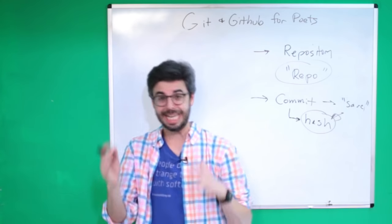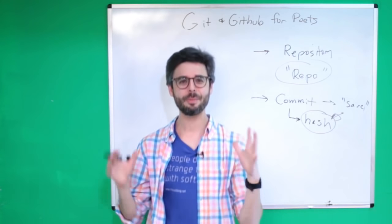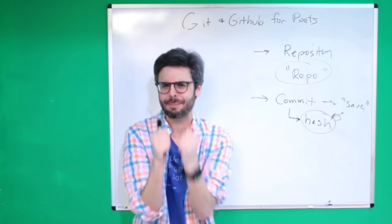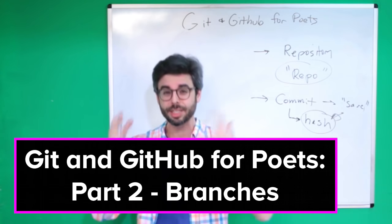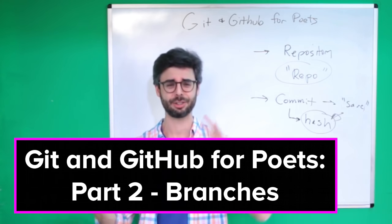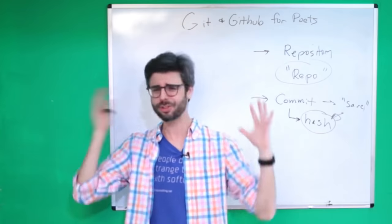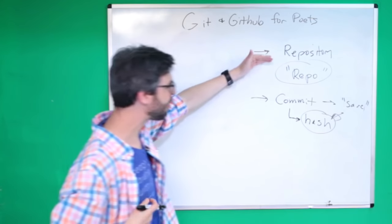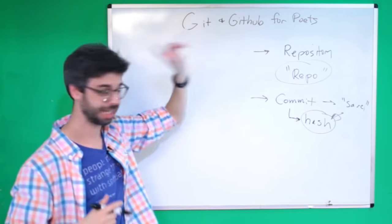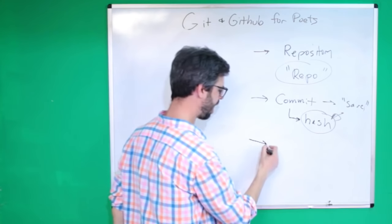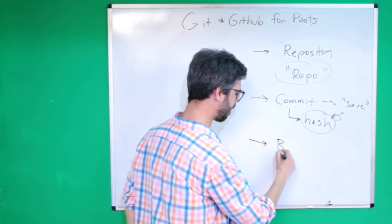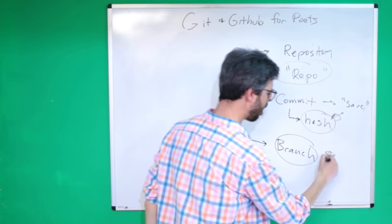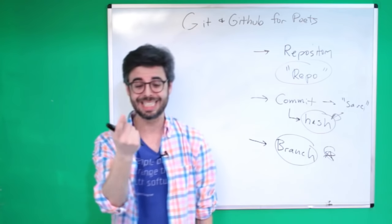This is part two of my git/GitHub for poets series. In this video I want to talk about a concept called branching. What is a branch, why would you use a branch, how does it work? We already talked in my first video about what a repository and a commit are, so now I want to talk about branches.